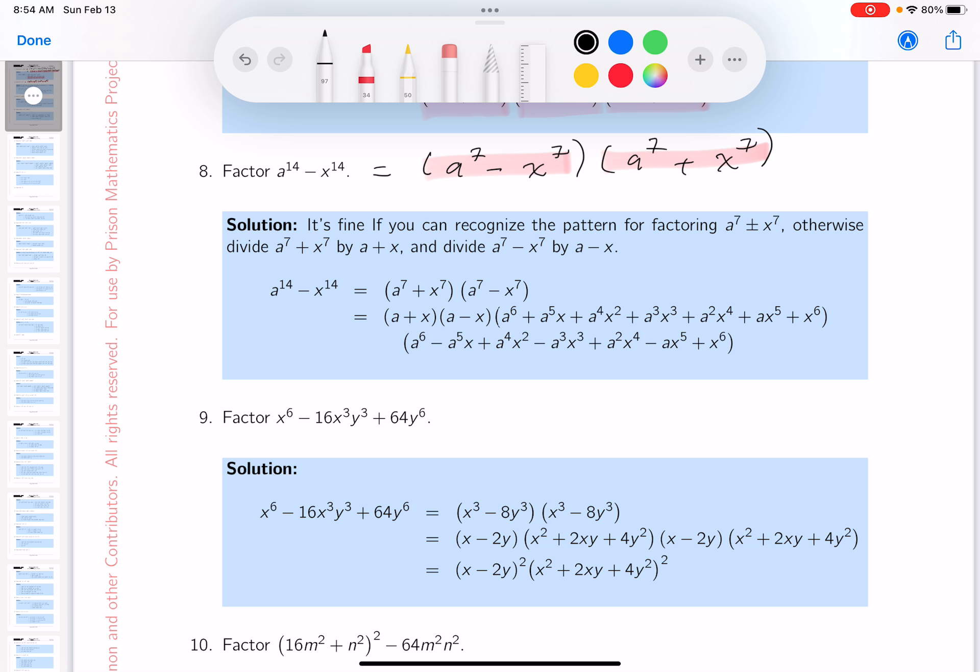So instead of me writing them all over again, let's just take one at a time. And let's do this one first. This one over here. And what's that one going to factor to? It's going to be a minus x. Do I see that? I see it. And then it's going to be, let's go through this then. a^6 plus a^5x plus a^4x^2 plus a^3x^3 plus a^2x^4 plus ax^5 plus x^6. All plus signs. So this one's done.